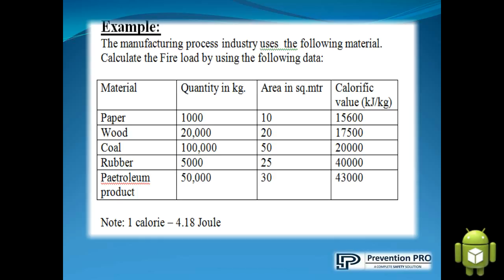Now we are going to see an example for the formula. The manufacturing process industry uses the following materials. Calculate the fire load by using the following data. The data given is: materials, quantity in kilogram, area in square meter, and calorific value in kilojoule per kg.